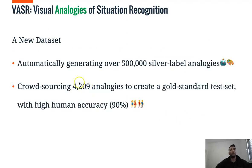And it is automatically generated with over 500,000 silver label analogies. And we crowdsource 4,209 analogies to create a gold standard test set with high human accuracy. We show it has over 90% accuracy.